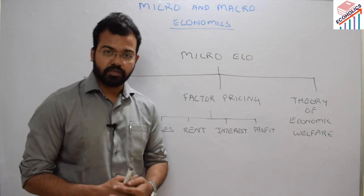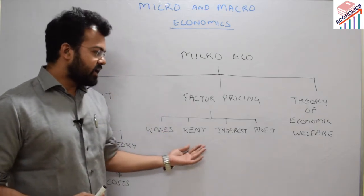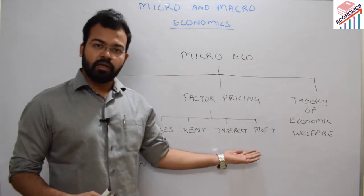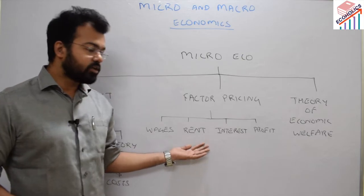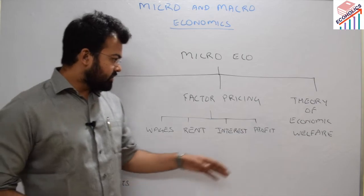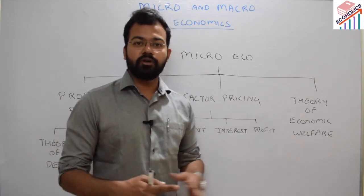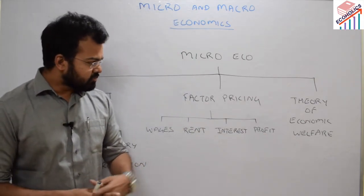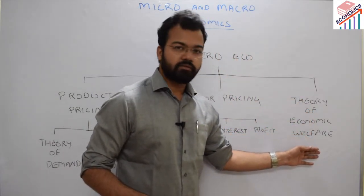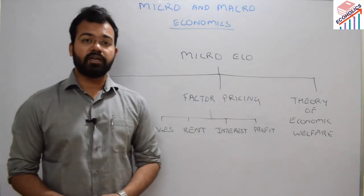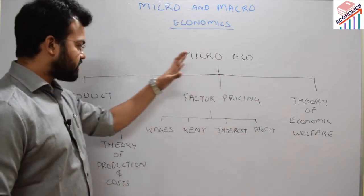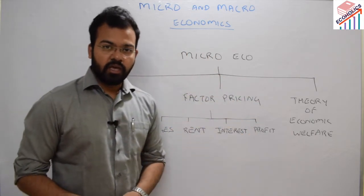Under factor pricing we have wages, rent, interest, and profit, each with different theories and important concepts. For example, David Ricardo gave an important rent theory, and Joseph Schumpeter gave an important profit theory. Under the theory of economic welfare, we will discuss Pareto optimality, Pigou, Kaldor, and related concepts.